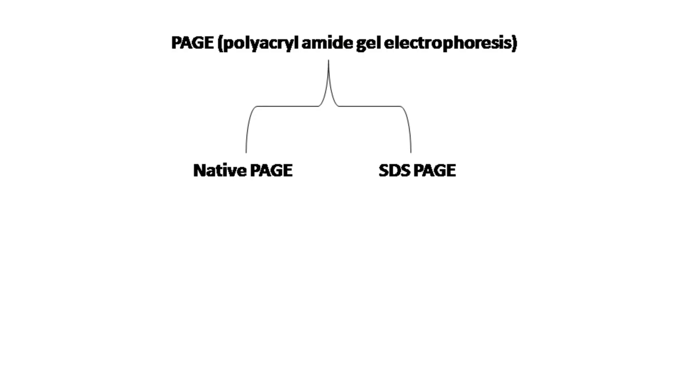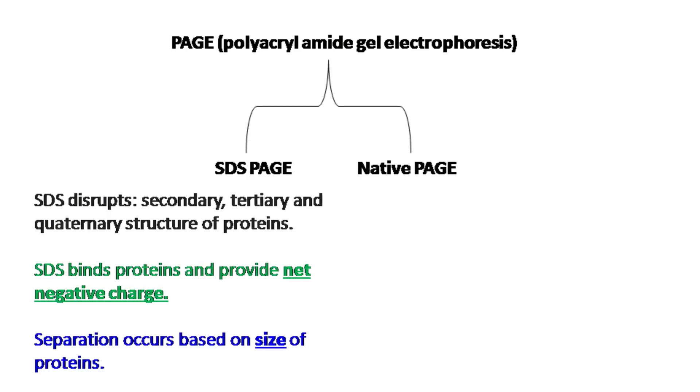PAGE can be of two types: SDS-PAGE and native PAGE. In SDS-PAGE, SDS is used as a denaturant. It binds protein and provides a net negative charge. As a result, the separation of proteins occurs based on the size.